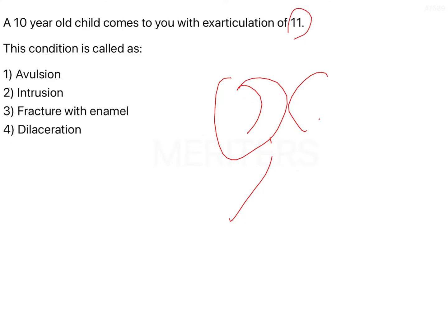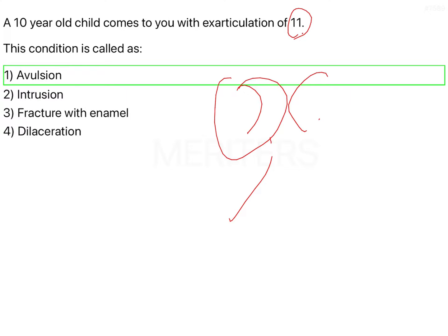1-1 is your maxillary right central incisor. So we know for a fact that when the tooth has come out completely from its socket, it is what is called avulsion. That is the answer to the question over here.